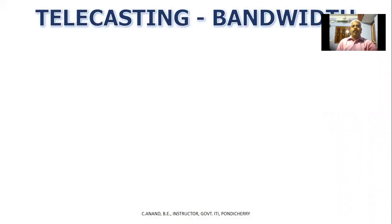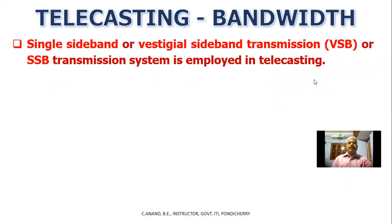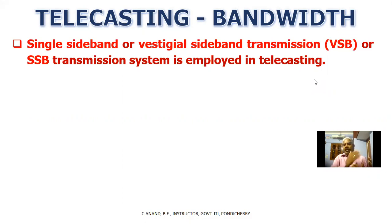What is the bandwidth in CRT TV? We use single sideband and double sideband systems. We use a different transmission system for radio, but TV uses a single sideband system — specifically vestigial sideband (VSB) transmission. This is an SSB transmission system, used as the telecasting system.